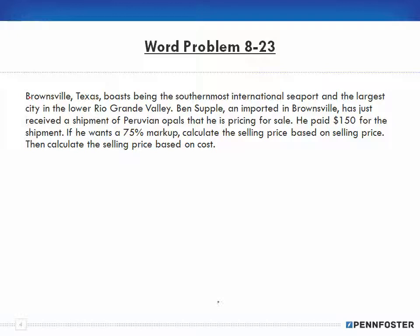All right. 8-23. Okay. It says here, Brownsville, Texas, boasts having the southernmost international seaport and the largest city in the lower Rio Grande Valley. Ben Supple, an importer in Brownsville has just received the shipment of Peruvian opals that he is pricing for sale. He paid $150 for the shipment. If he wants a 75% markup, calculate the selling price based upon selling price and calculate the selling price based upon cost. So we're doing two different things here. We're going to base it upon, we're going to markup based upon the selling price and then we're going to do the calculation as the markup based upon the cost. And you'll see that it does make a difference. You're not going to get the same answer because you're talking about two different things.